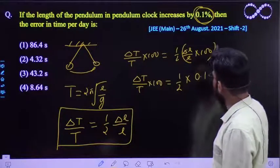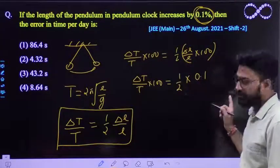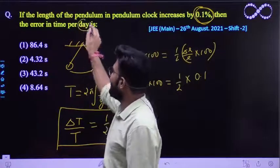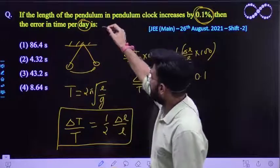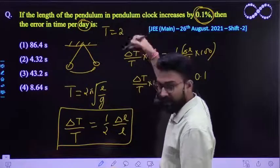Okay, so this is the percentage which is already given to you. So percentage increase in length is this, 0.1 percent. Now in the entire day, in one day, what is the total time? One day's time period is how much? 24 hours.